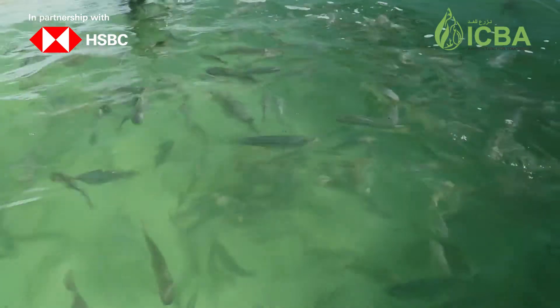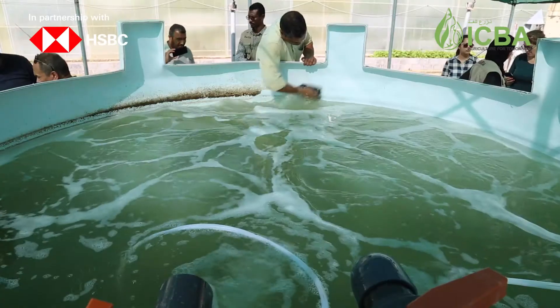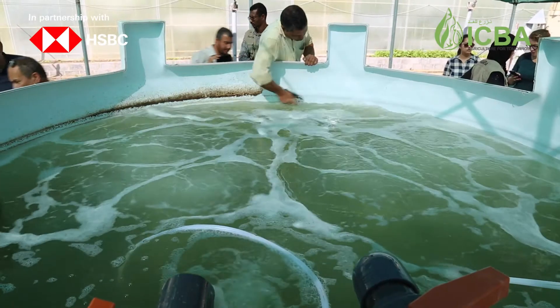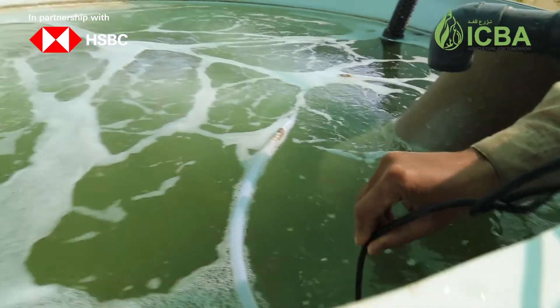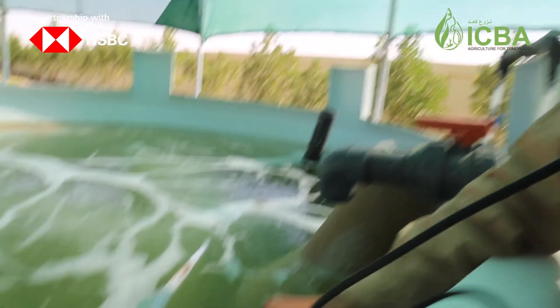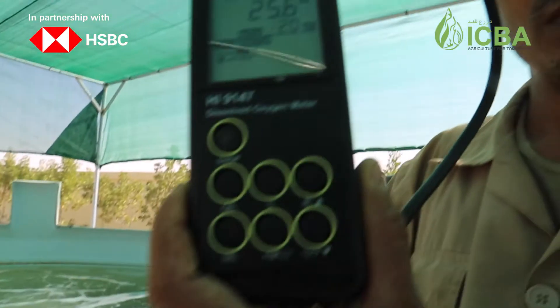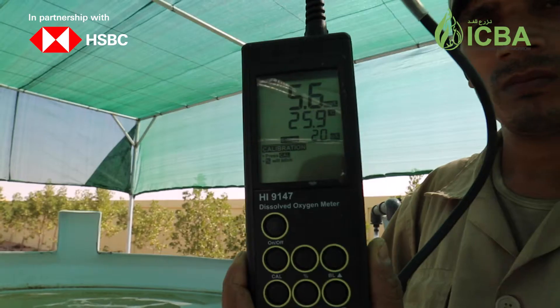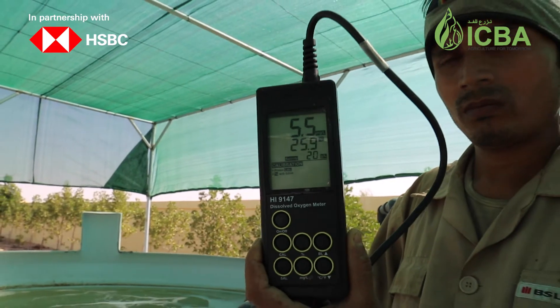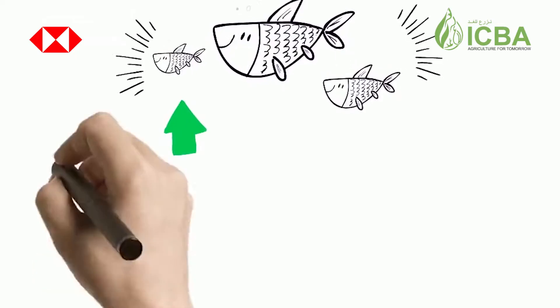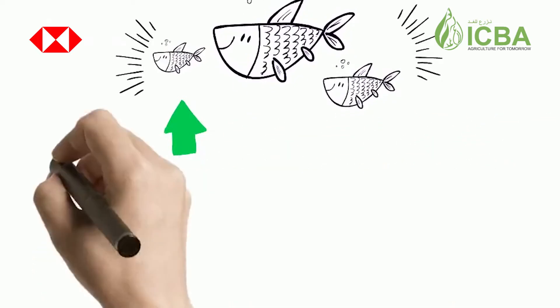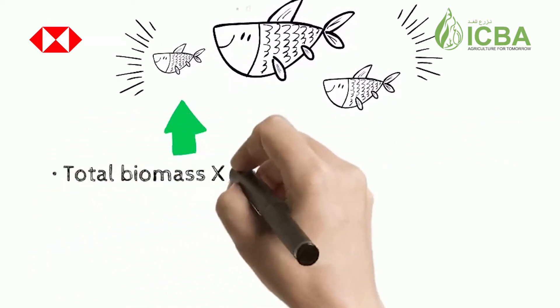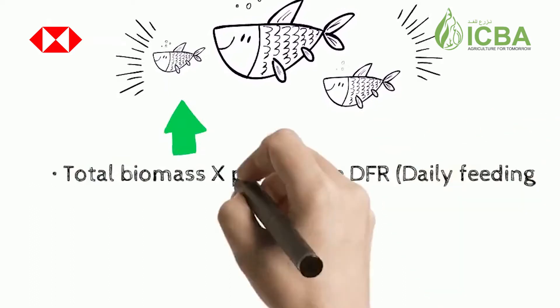The fish should be in good condition and not lethargic. The tank should be clean, and the oxygen level should be between the desired limits — above 4.5 parts per million (ppm).